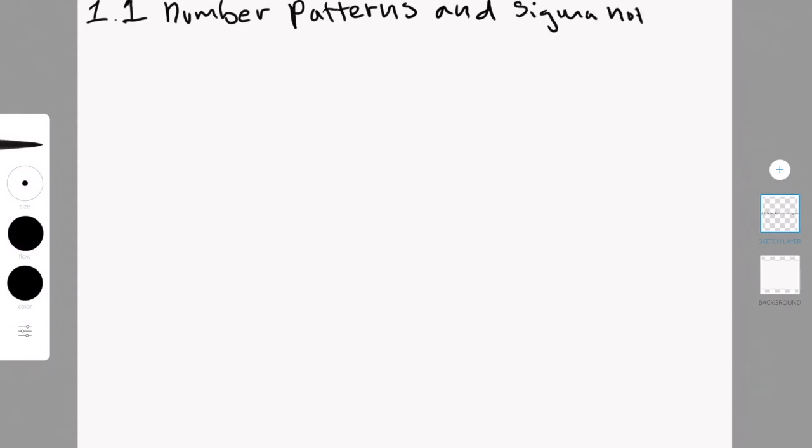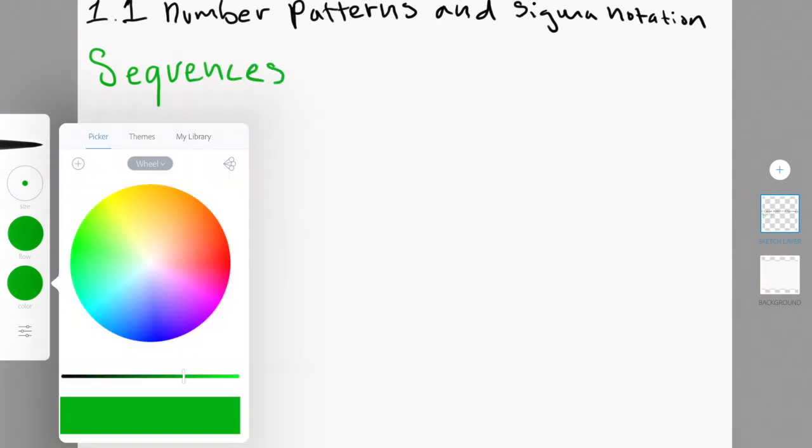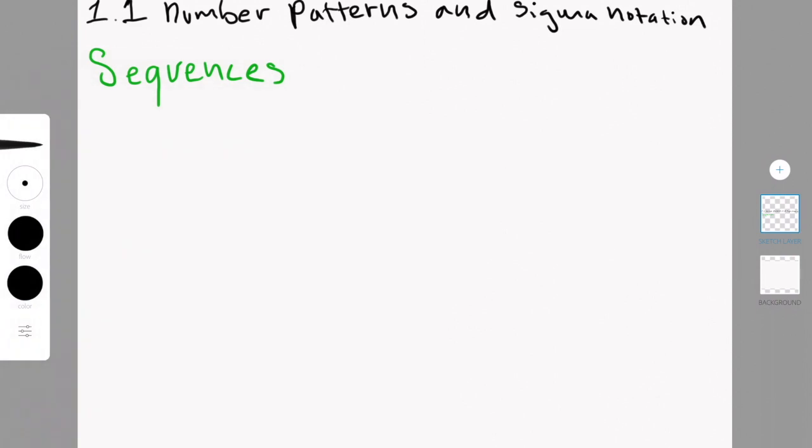So 1.1 is number patterns and sigma notation. Within this, you have to understand what a sequence is and what a series is. A sequence is a list of numbers that are written in a defined order that follow a specific rule. In this rule, it could either be a decreasing or an increasing sequence, like the numbers could be getting larger or smaller, but it still follows a specific rule.